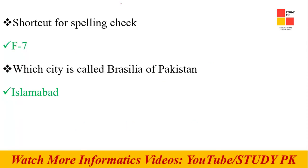The first question is about the shortcut key for spelling check — the correct answer is F7. Next, which city is called the Brazilia of Pakistan? The correct answer is Islamabad.